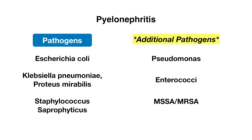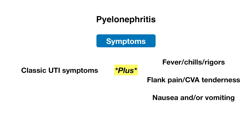When it comes to the symptoms of pyelonephritis, patients can also have those classic UTI symptoms, but they typically will have additional symptoms like fever, chills, rigors — basically your systemic signs of illness — flank pain or CVA tenderness, as well as nausea and/or vomiting.